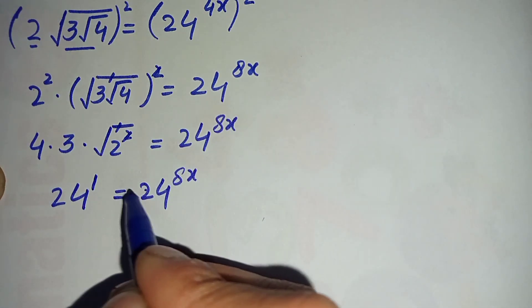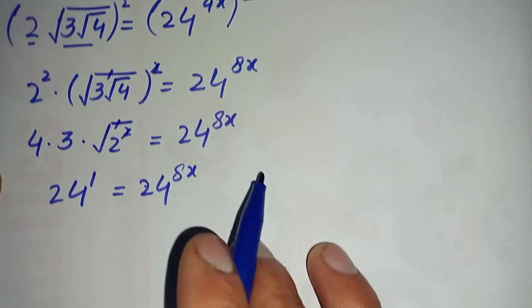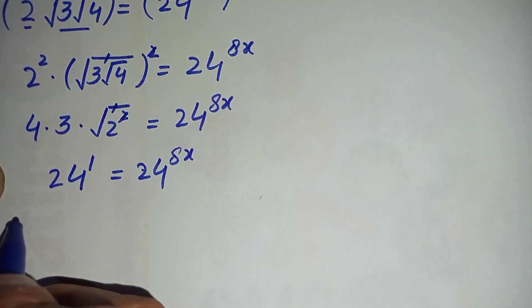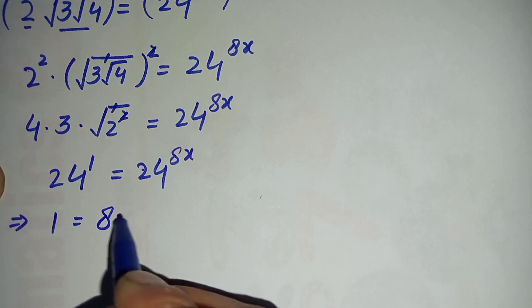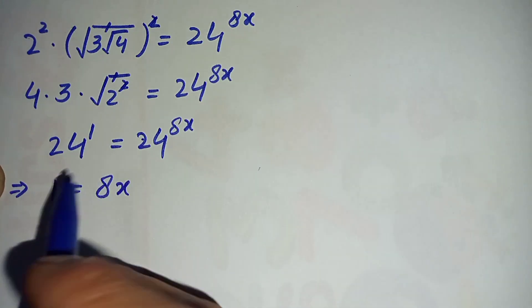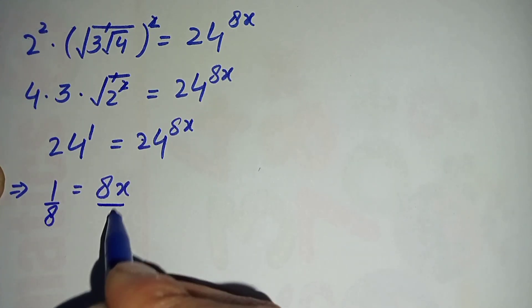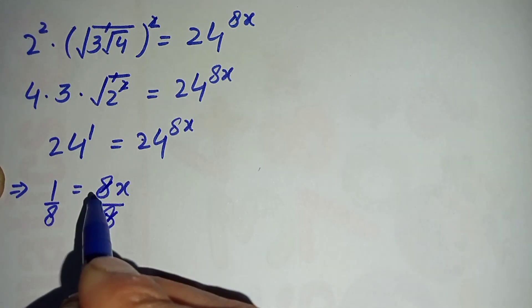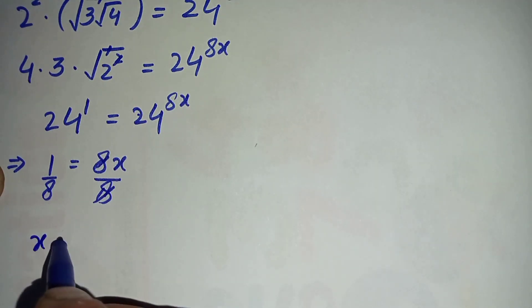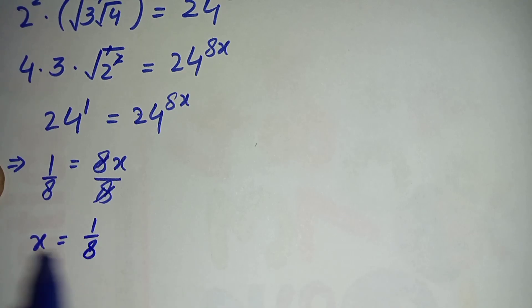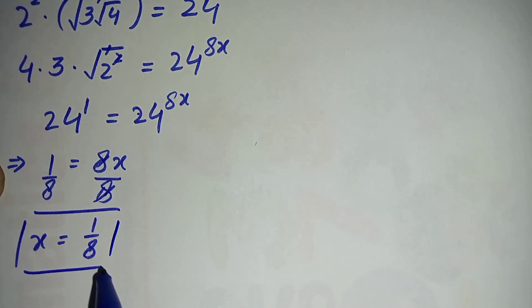It becomes 24 equals 24 raised to power 8x. The bases are the same, so we compare the powers: 1 equals 8x. Dividing both sides by 8, the 8s cancel, giving x equals 1 over 8.